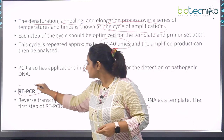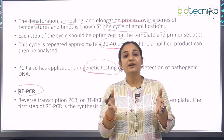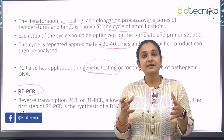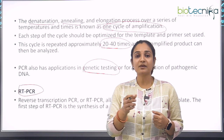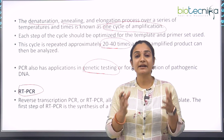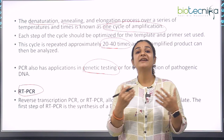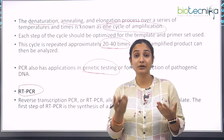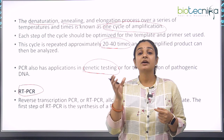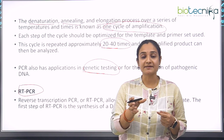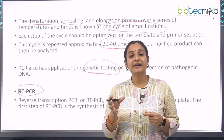RT-PCR stands for reverse transcription polymerase chain reaction. The major difference between PCR and RT-PCR is that in PCR we use DNA as the template, while in RT-PCR we use RNA as the template. RNA is very unstable to handle, so RT-PCR is used for that. We have been hearing the term RT-PCR a lot after the pandemic — wherever we travelled, it was mandatory to take an RT-PCR test to detect whether the COVID virus was present in us or not.